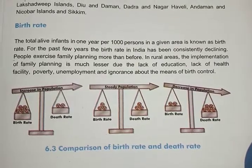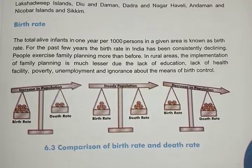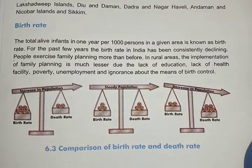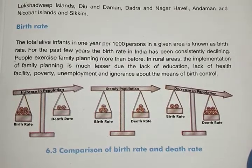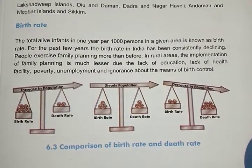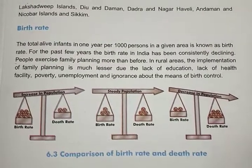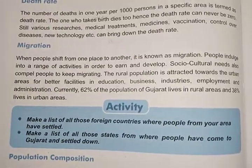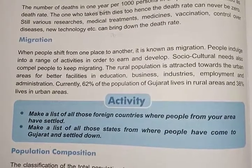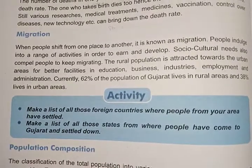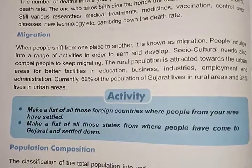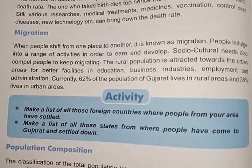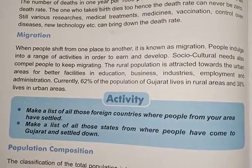A comparison between birth rate and death rate shows that population increases when birth rate exceeds death rate, the population is steady when birth rate and death rate are equal, and the population decreases when death rate is more compared to birth rate. Birth rate is the number of alive infants and death rate is the number of deaths in a year per thousand persons in a specific area.